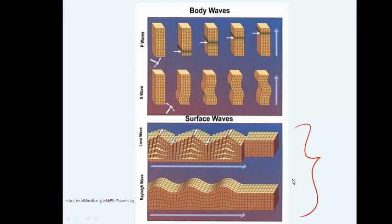Body waves travel underground, and there are two kinds to discuss. There are P waves, also called primary waves, and they travel at about 6 kilometers per second through the crust. They cause the ground to compress and stretch like a spring. You can take a look at table 12.3 to get a graphic that shows this quite well.